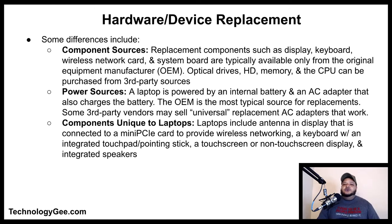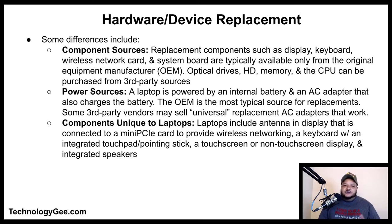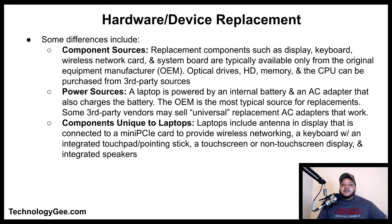Some general differences include component sources. Replacement components such as displays, keyboards, wireless network cards, and system boards are only available from the OEM, or original equipment manufacturer — these are known as OEM parts. Other components such as optical drives, hard drives, memory, and the CPU can be purchased from third-party sources but differ greatly from their desktop counterparts.